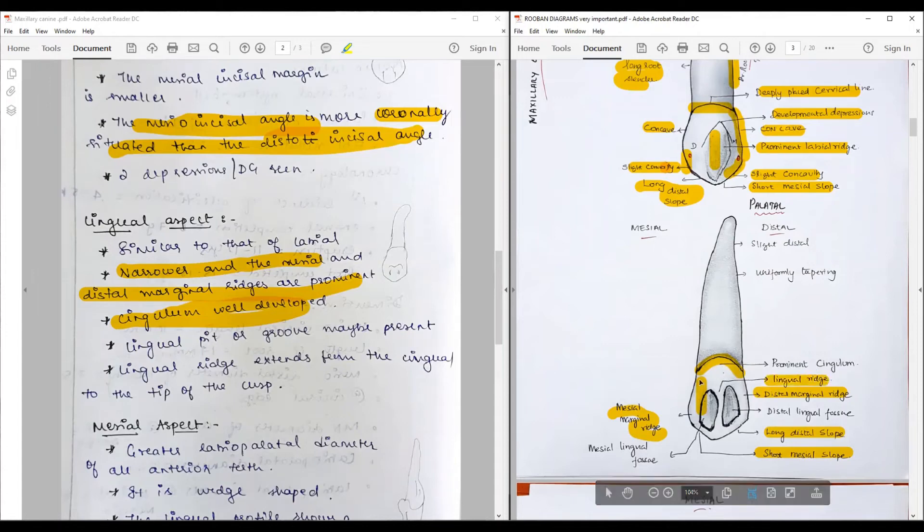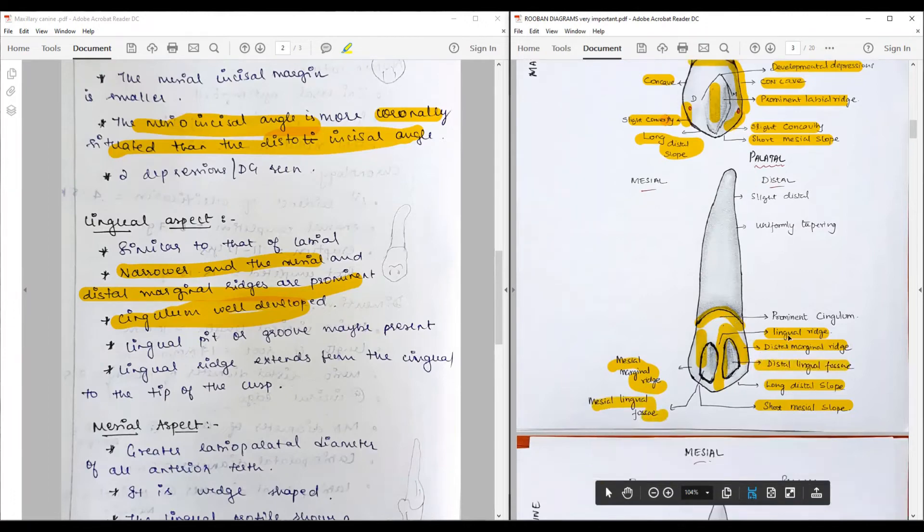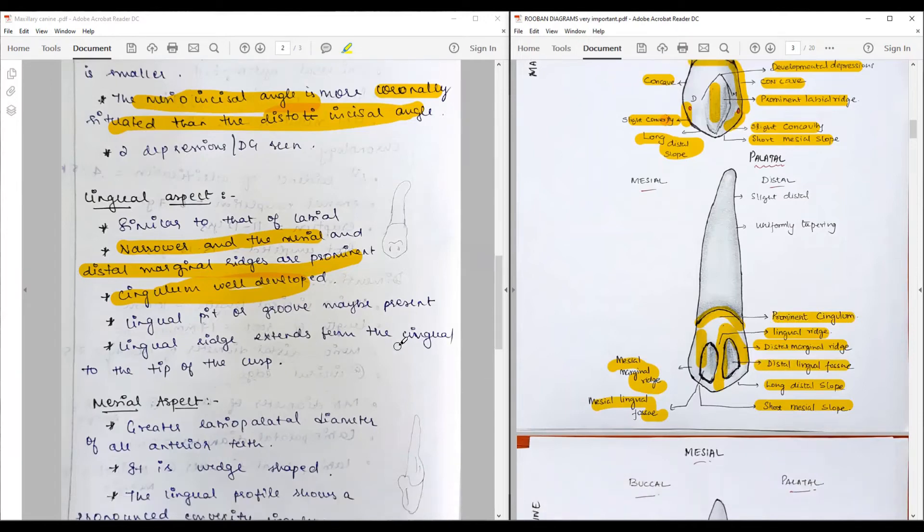They encompass what we call the lingual fossa. Here we have a very prominent lingual ridge that runs, formed by the union of the mesial marginal ridge and distal marginal ridge, and runs nearly to the entire length of the root, dividing the lingual fossa into a mesial lingual fossa and a distal lingual fossa. The cingulum is much more prominent. We may see lingual pit or grooves also. The root is uniformly tapering with a slight distal tint.